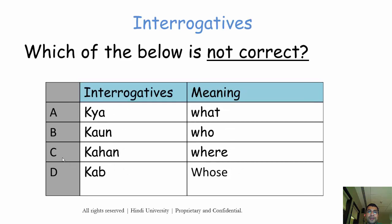The next sample question is on interrogatives. Which of the below interrogatives is not correct? Kia means what, Kon means who, Kaha means where, and Kab means whose. Which of them is not correct? If you don't know the answer, you can always go and watch my videos online — I'm not going to tell you the answers, I'll give you some time to think about it.